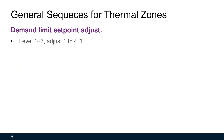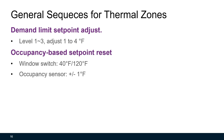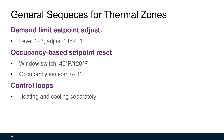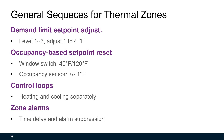General sequences for thermal zones include the following. For peak demand reduction, the guideline defines three demand limit levels; the zone cooling set point can be adjusted by 1 to 4 degrees F. If operable windows are open, the zone heating set point should be temporarily set to 40°F and cooling set point to 120°F. If an occupancy sensor indicates no occupant, the zone heating set point should be reset lower by 1 degree and cooling set point higher by 1 degree. For zone temperature control, heating and cooling control loops should be separate.